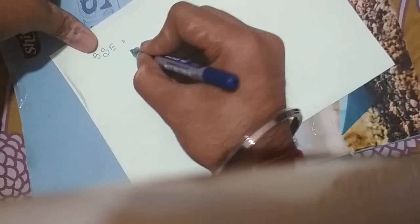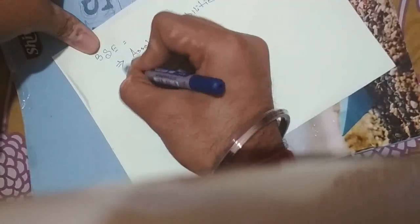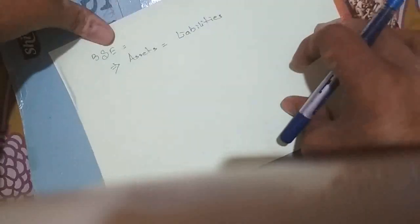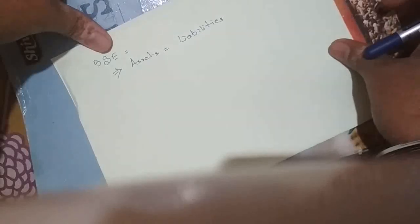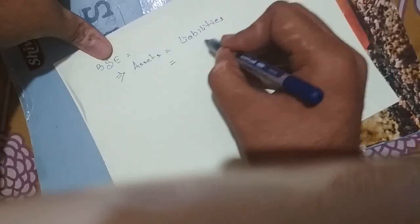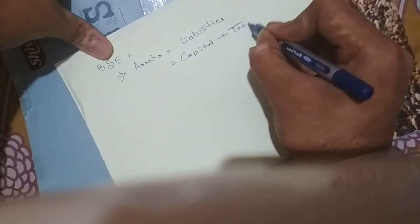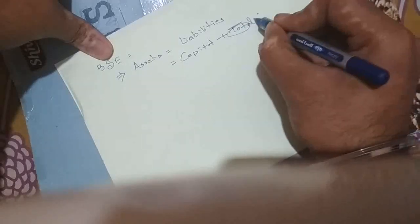The balance sheet equation — we will use the acronym BSE. The balance sheet equation is nothing but: total assets equals total liabilities. I already told you when we started module B that total assets equals total liabilities. That's why the name balance sheet comes like that, because assets always equal liabilities. Total assets equals capital plus other liabilities.